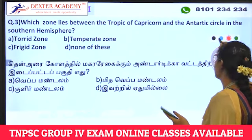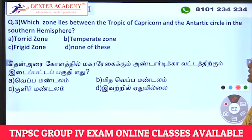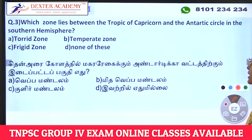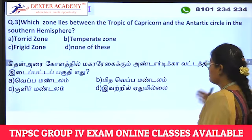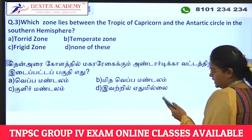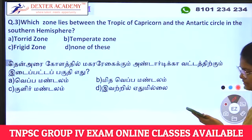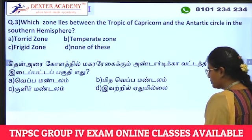Third question: which zone lies between the Tropic of Cancer and the Antarctic Circle in the Southern Hemisphere? Options: Torrid zone, Temperate zone, Frigid zone, None of these. The answer is the second option — Temperate Zone.